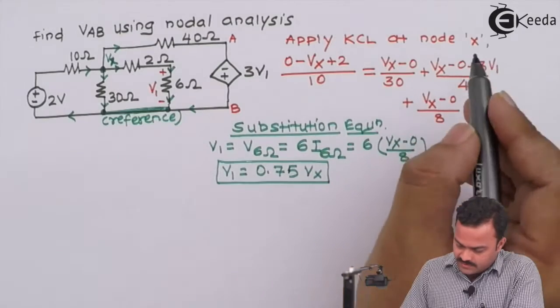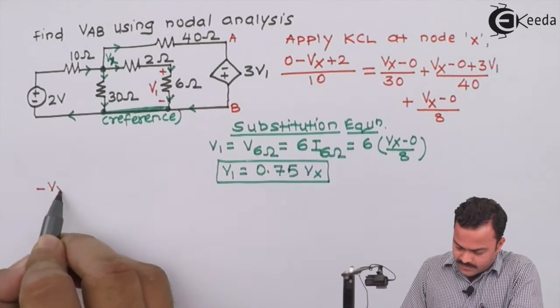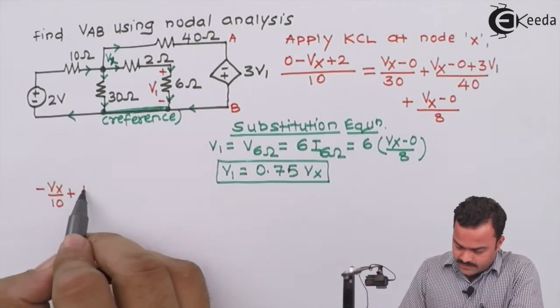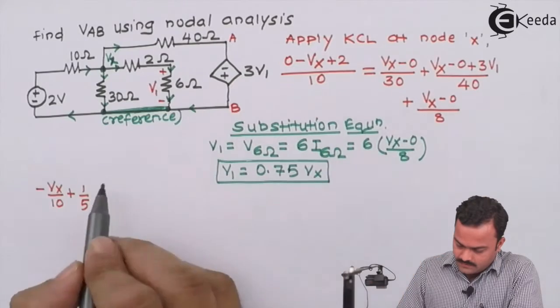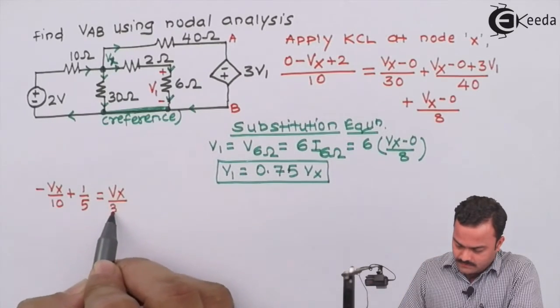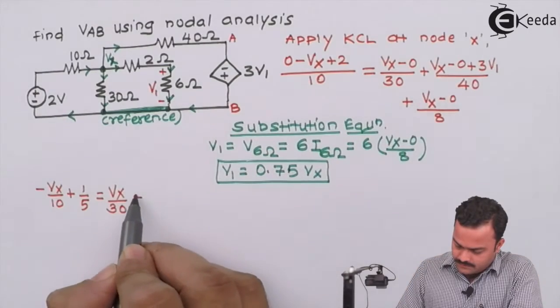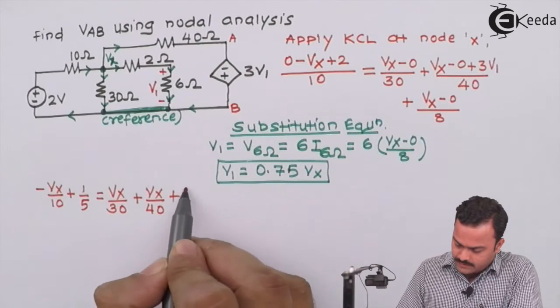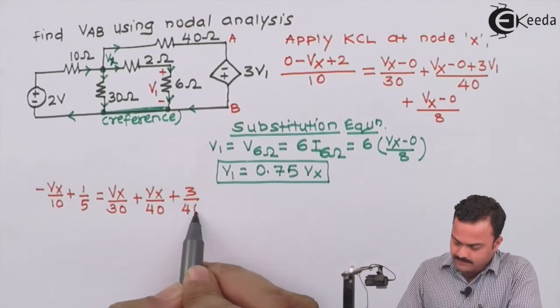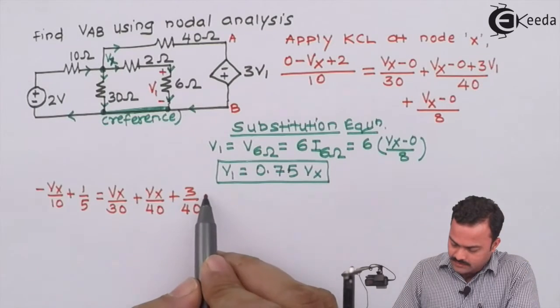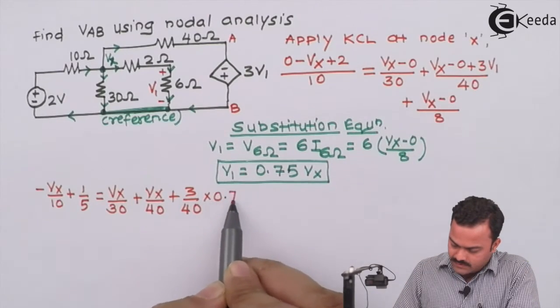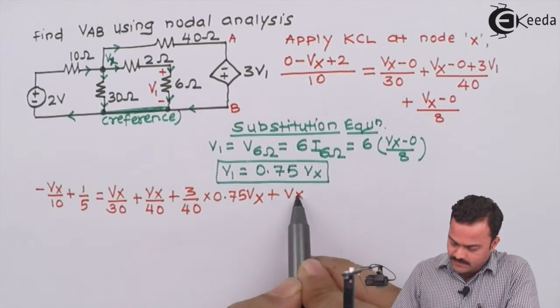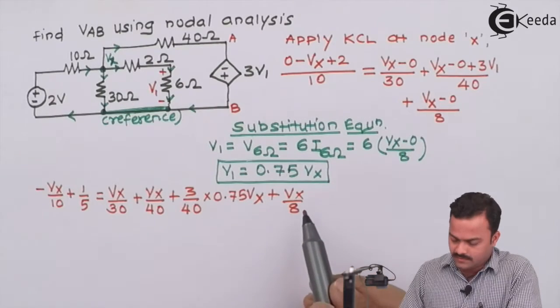So let's simplify this equation, which will be minus Vx by 10 plus 2 by 10. I can say it is 1 by 5 equal to Vx by 30 over here plus Vx by 40 plus I will take first coefficient separately which is 3 by 40. And finally, plus Vx by 8. So this is the equation we get.